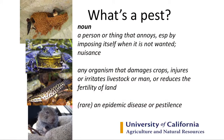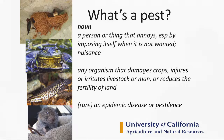What's a pest? A person or thing that annoys, especially by imposing itself when it's not wanted — a nuisance. More relevantly: an organism that damages crops, injures or irritates livestock or man, or reduces the fertility of land. Epidemic diseases are also considered pests, and many animals carry pests too.